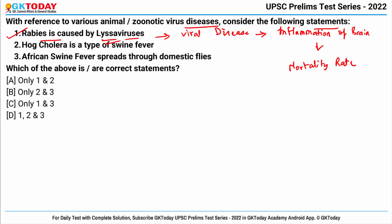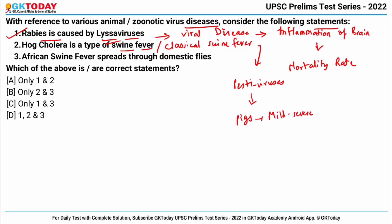Statement two says Hog cholera is a type of swine fever. Hog cholera is also called classical swine fever and is caused by pestiviruses. It infects pigs and causes illness ranging from mild to severe forms, where death can occur within just 15 days. This is also correct.